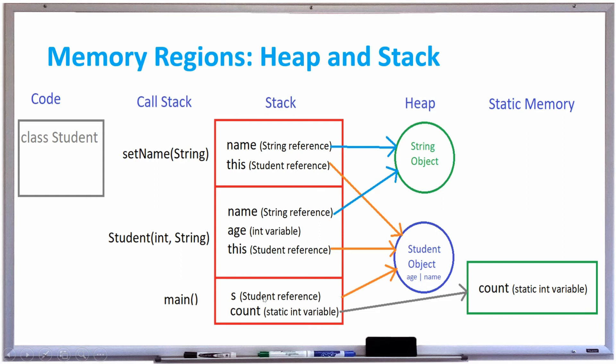And then, as we created the new student by saying student s is assigned to new student, that constructor call right here, student, gets put onto the call stack, and on the actual stack there's a this reference for the student, which points to the object, there's an age integer variable, and the name, which is a string reference, because string is also a class, that gets put onto the heap. So all your string objects get stored on the heap, as well as student objects.